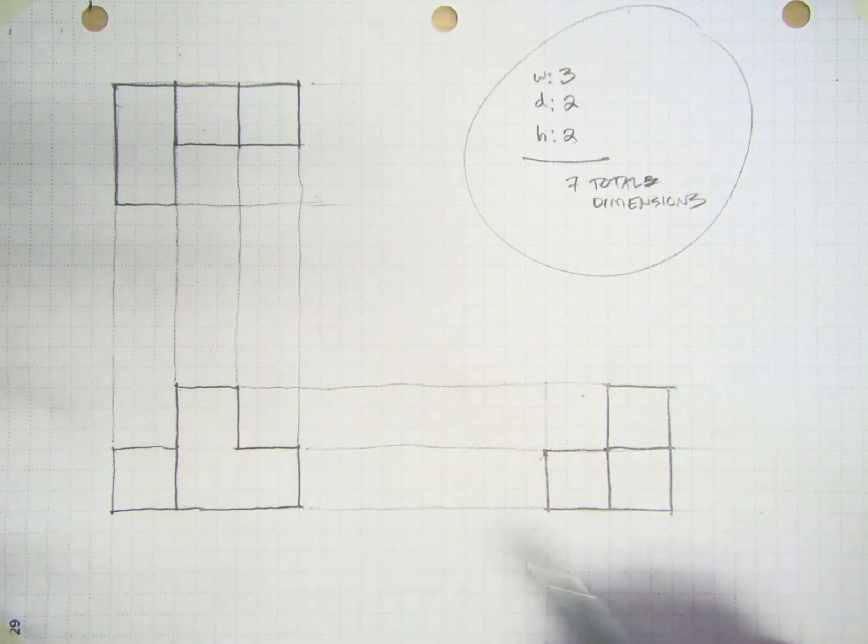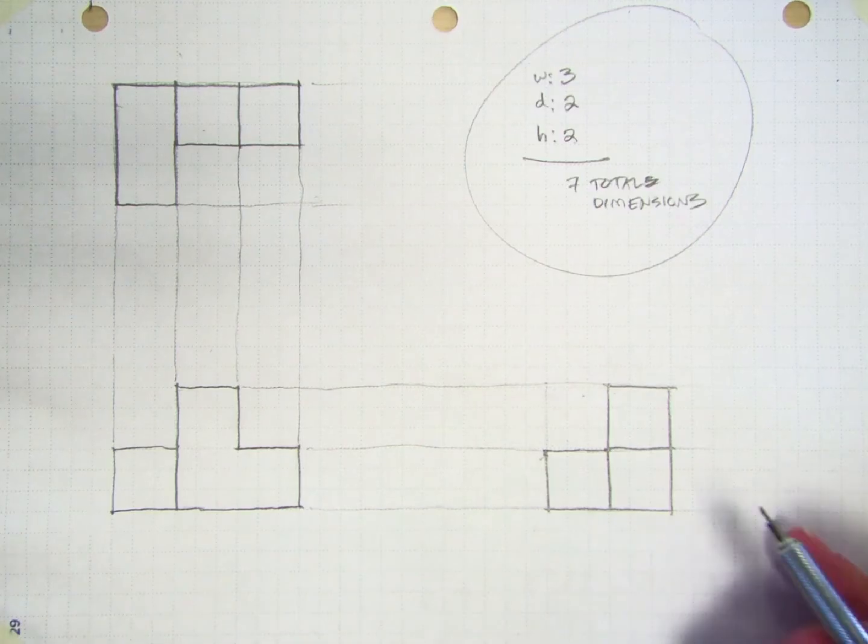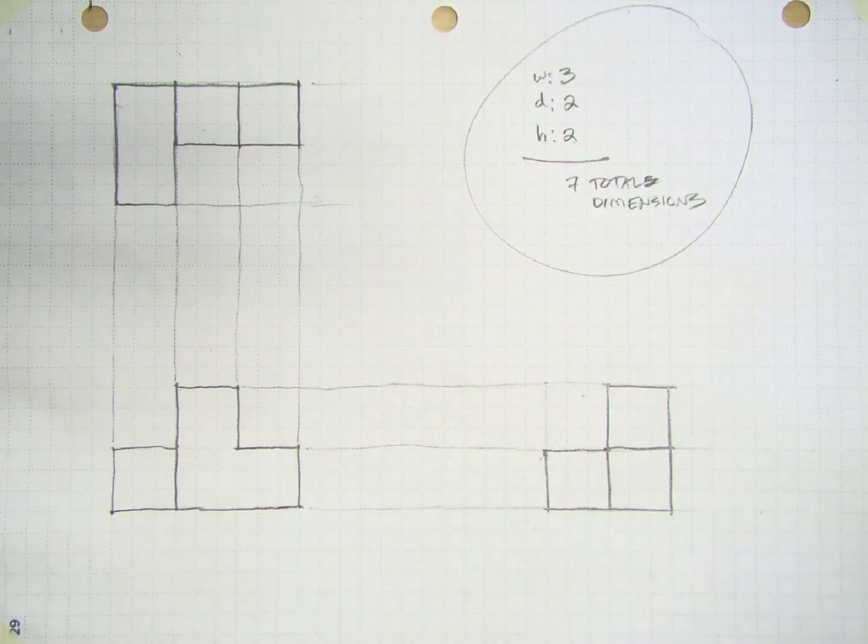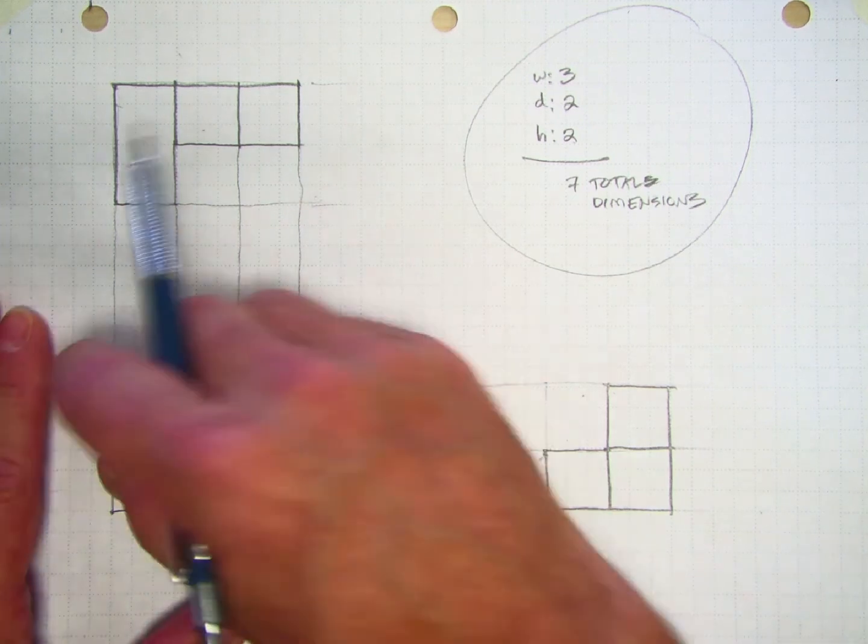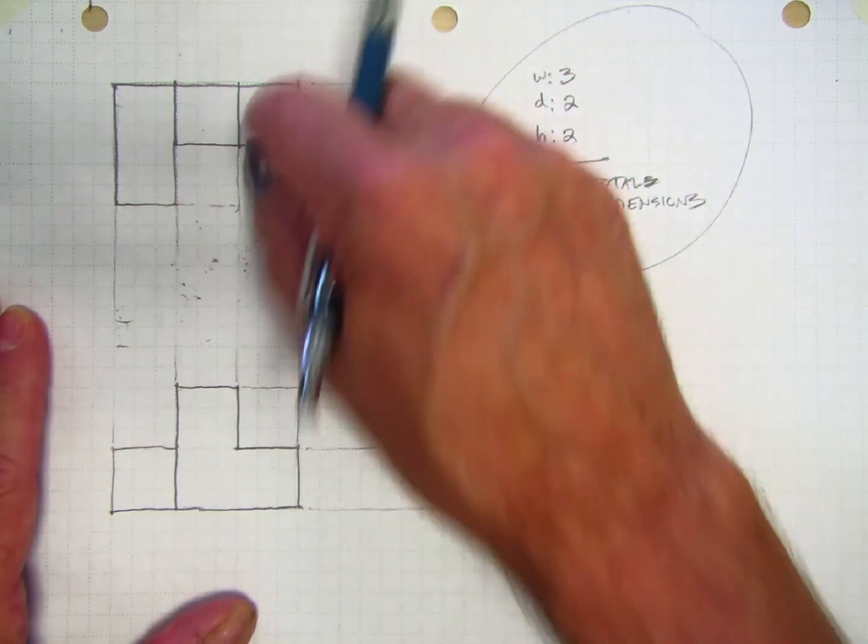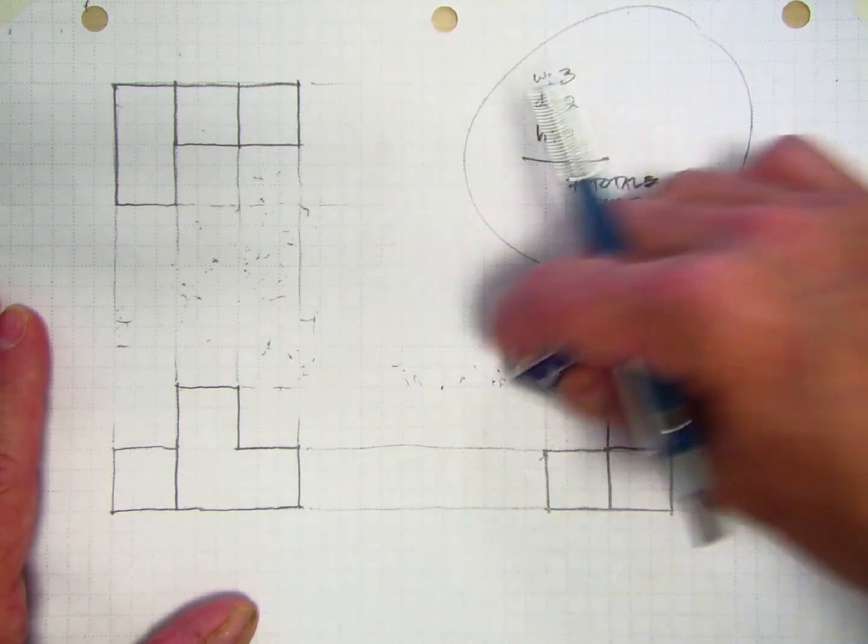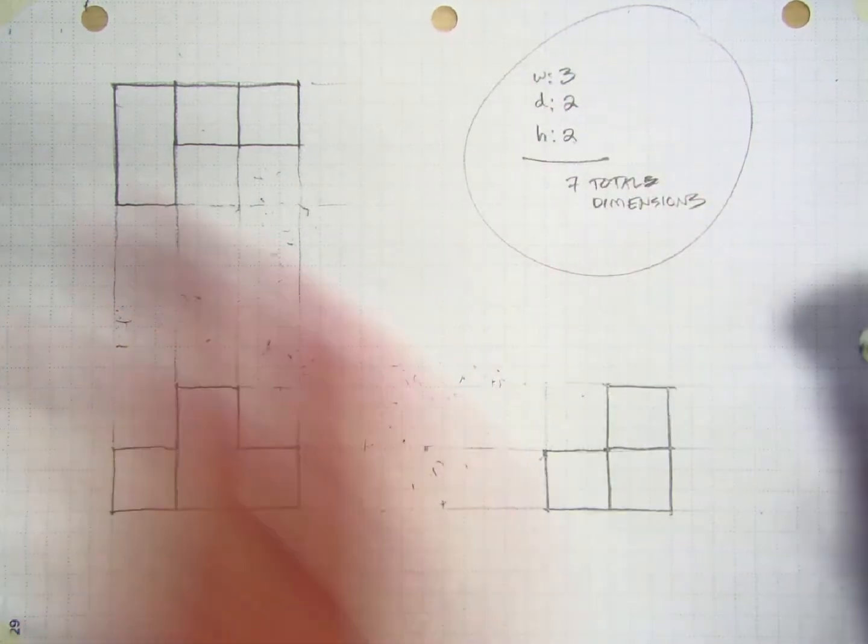Now the reason we spent so much time picking the best front view was because we want all of our dimensions, or as many of our dimensions as possible, to be on that view. I'm going to go ahead and just clean up some of my construction lines so that the dimensions stand out better.